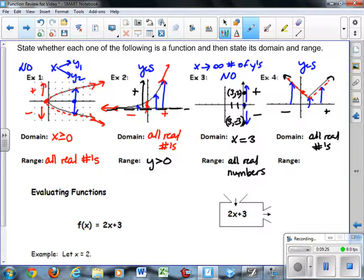The range, it looks like the lowest possible value for y is one and then all of the other values for y are greater than one. So we have y is greater than or equal to one for our range.